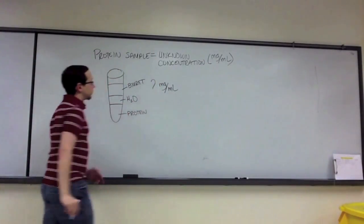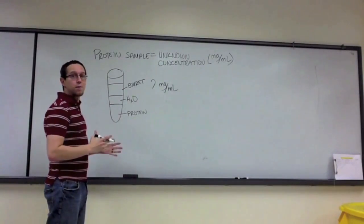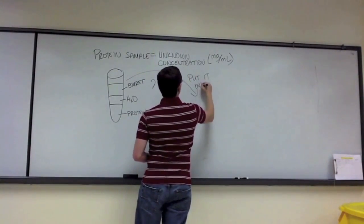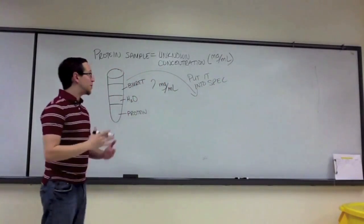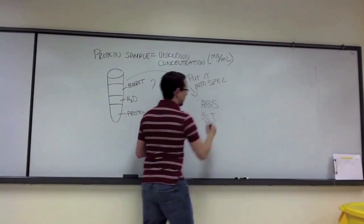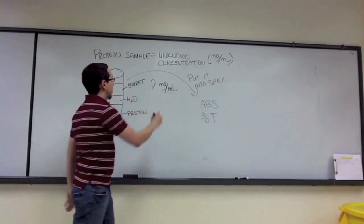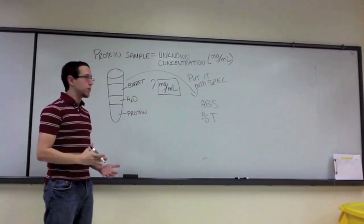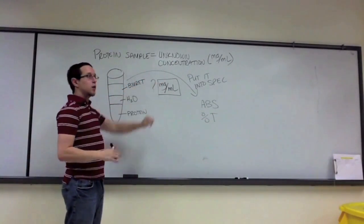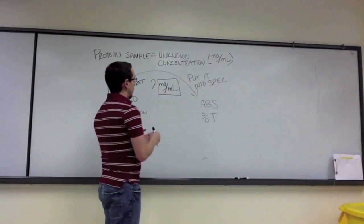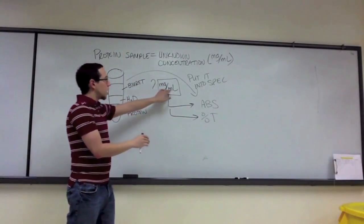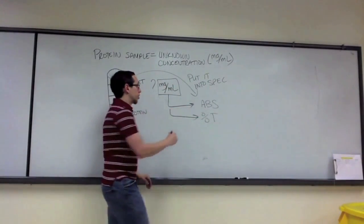We have some concentration in milligrams per milliliter — that is, milligrams of protein per milliliter of this solution as a whole — but we don't know what it is yet. We can put it into the spectrophotometer, but the spec can only give us two readings: absorbance and percent transmittance. Neither of these values is in milligrams per milliliter, and that's a problem, because no matter what we get out, it won't directly tell us the concentration of the unknown sample.